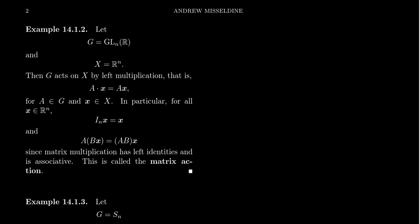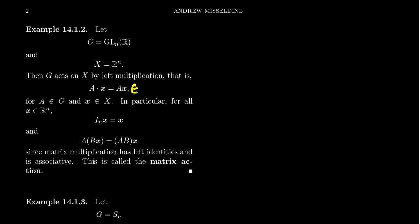Our first example comes from linear algebra. Take our group to be the general linear group of n-by-n matrices on the real numbers, and take as our set the vector space of real vectors with n entries. So X here is n-dimensional Euclidean space, and G is the general linear group of n-by-n matrices. Then G acts upon X by simply using matrix multiplication, multiplying on the left of these vectors by a matrix. So A dot x — this is the action — how does matrix A act on vector x? It's just matrix multiplication, giving you something back in R^n, a vector with n entries.